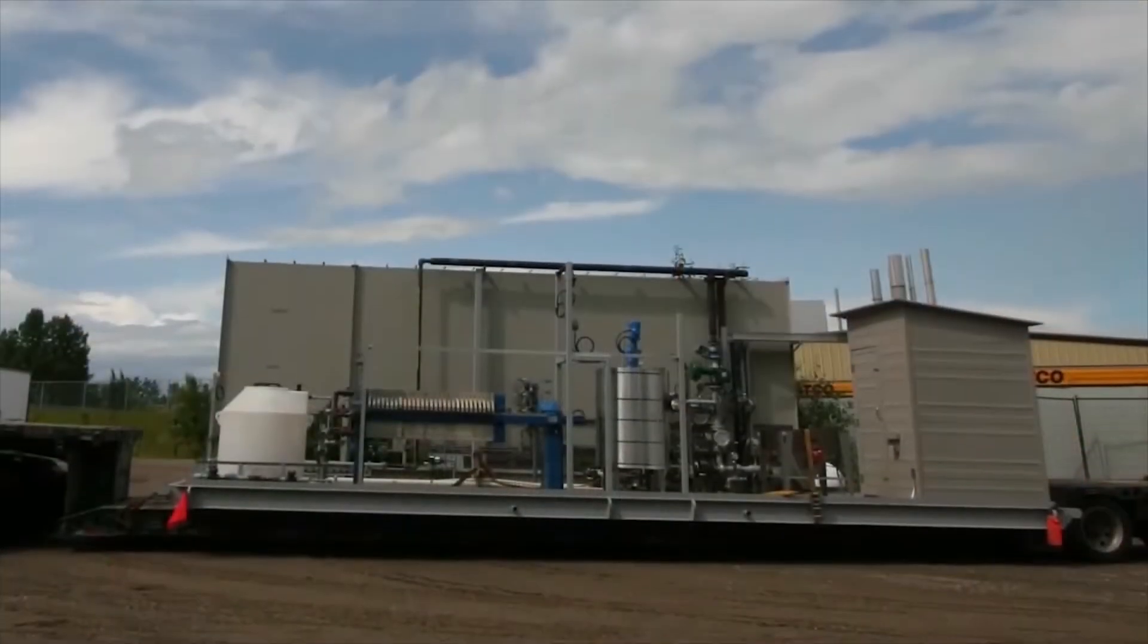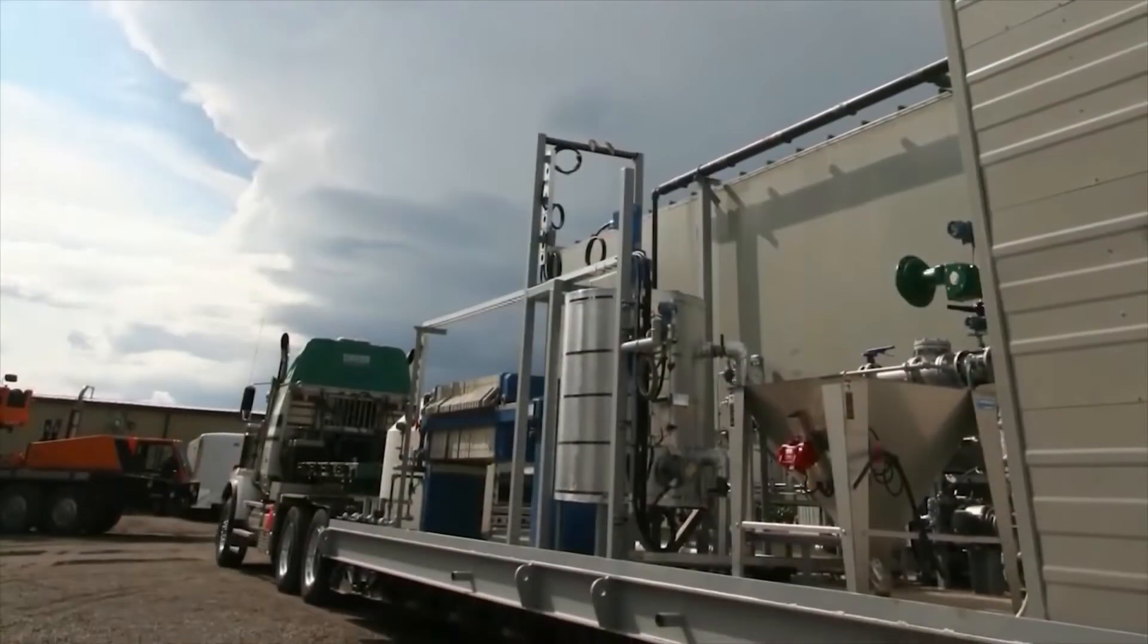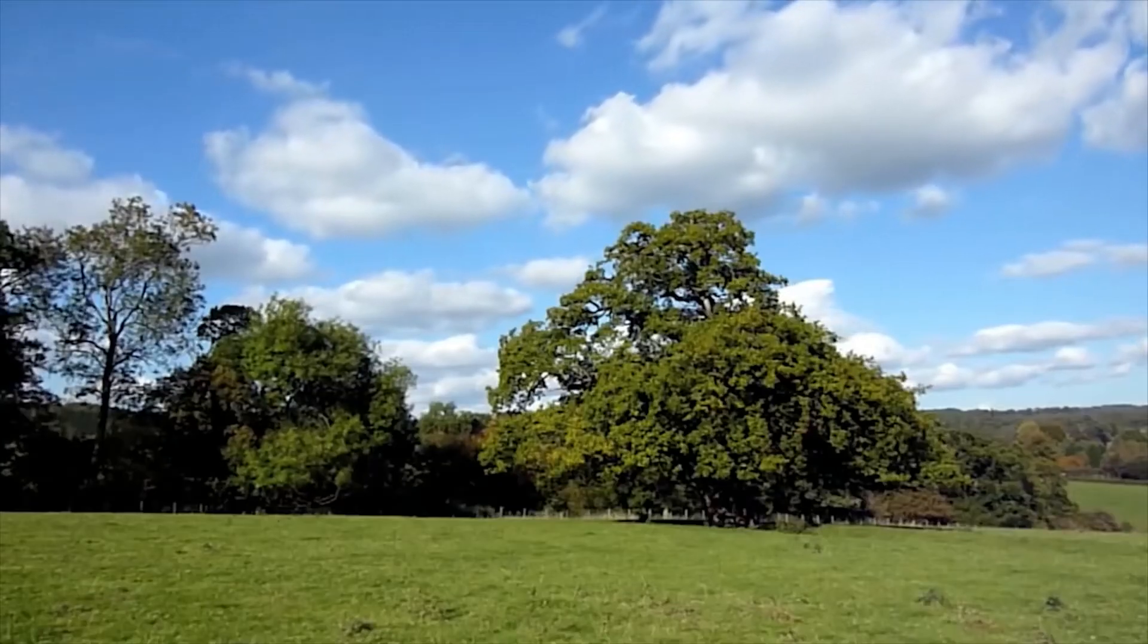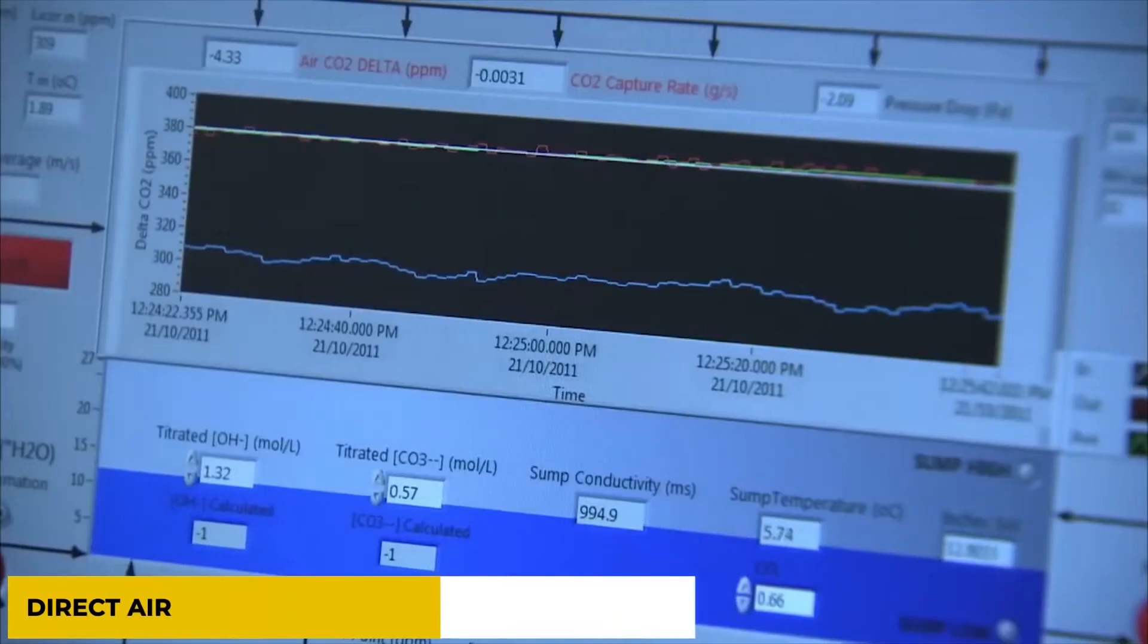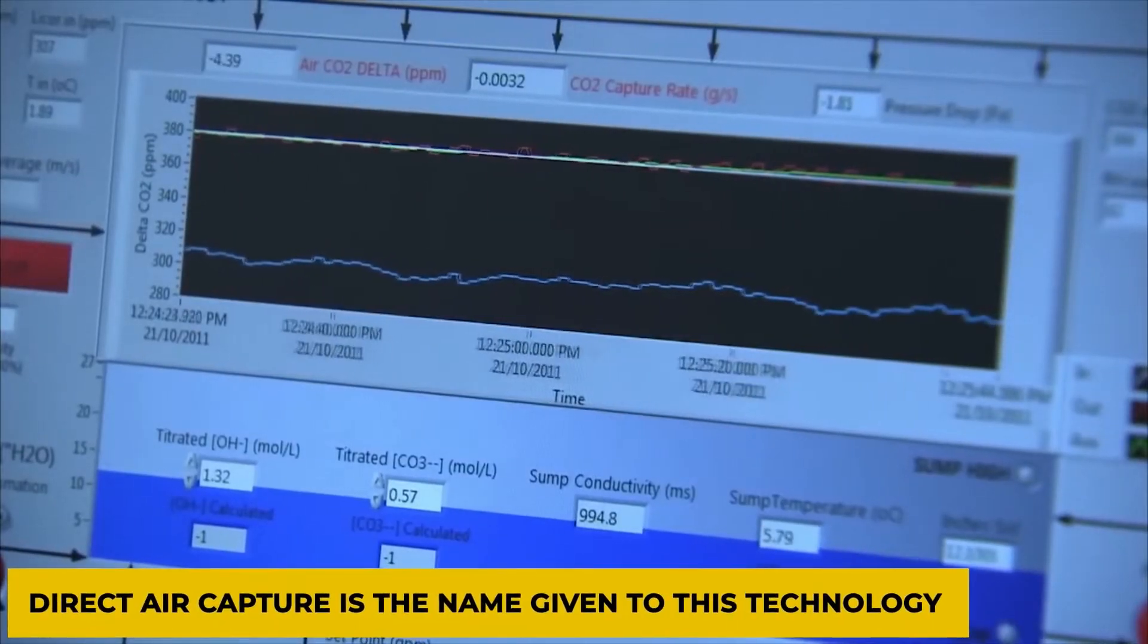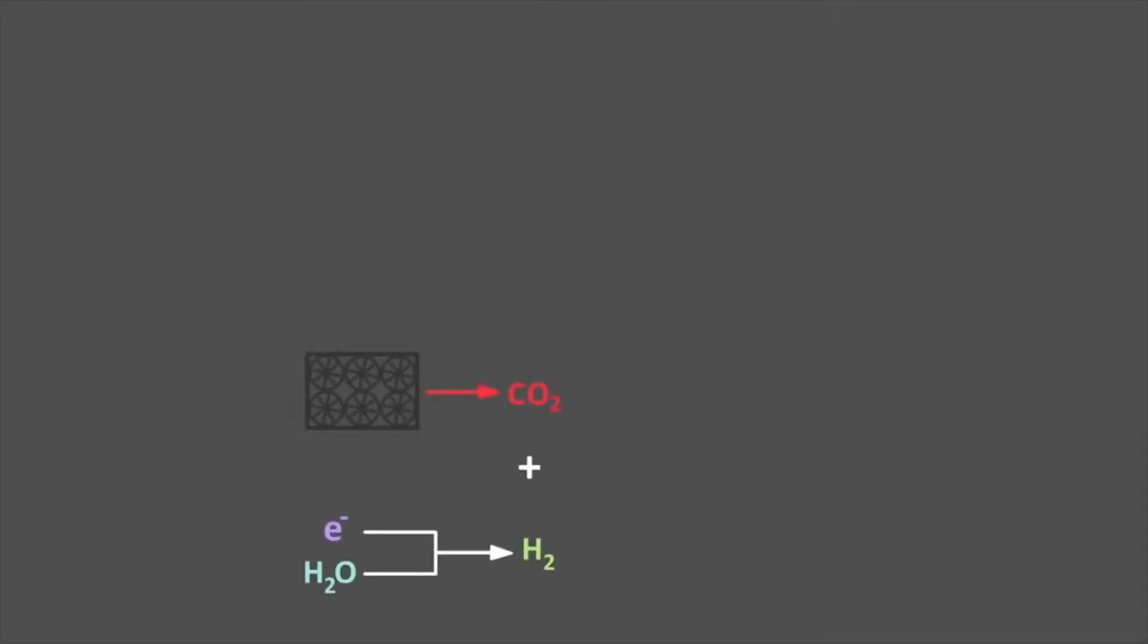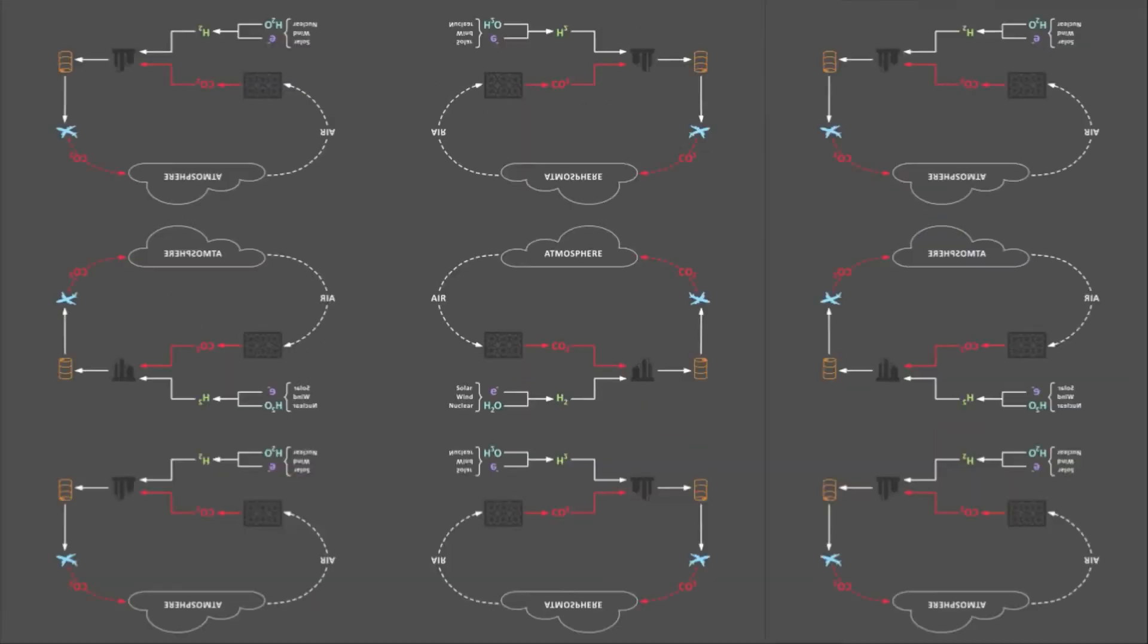However, new technology may be able to perform the same function as trees, absorbing more carbon dioxide while taking up less land. Direct air capture is the name given to this technology. It entails extracting carbon dioxide from the atmosphere and storing it in deep geological tunnels beneath the earth, or combining it with hydrogen to make synthetic fuels.